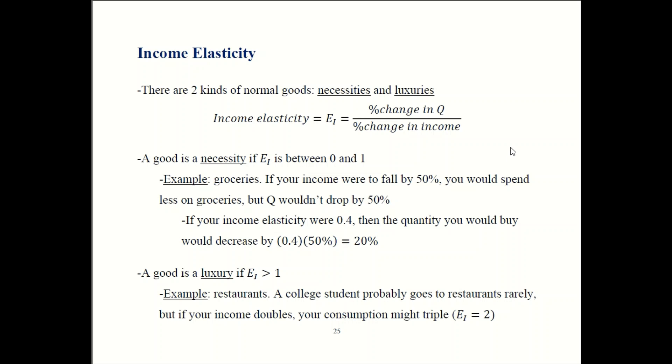So let's talk about groceries. If your income were to cut in half, you're not going to start eating half as much. Maybe you start buying more ramen noodles again and you cut back on some of the more expensive stuff. But cutting your budget in half is not really going to be a very viable option. So if your income falls by 50%, your consumption falls by less than 50%. So just to pick a number, let's say income elasticity is 0.4. So the change in your quantity is going to be 0.4 times that 50% drop in income. That means you cut back by 20%.